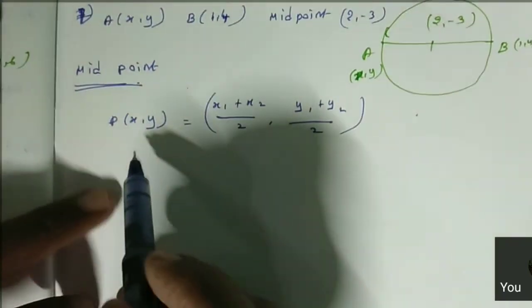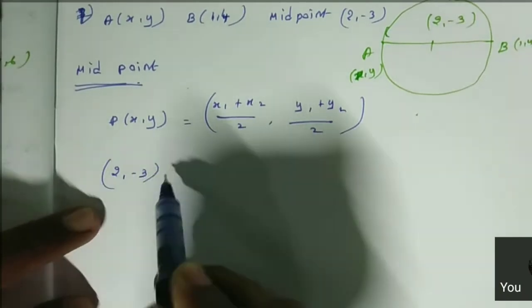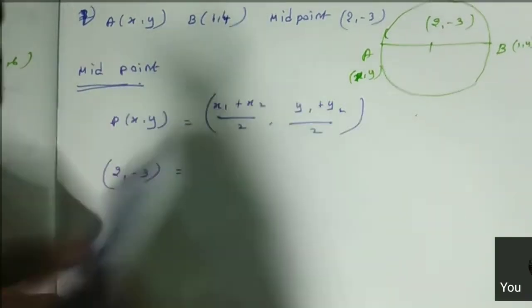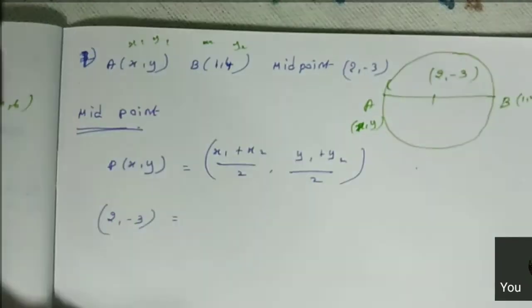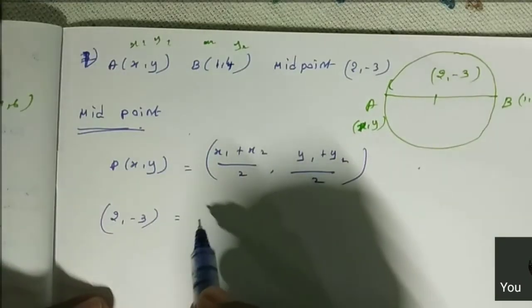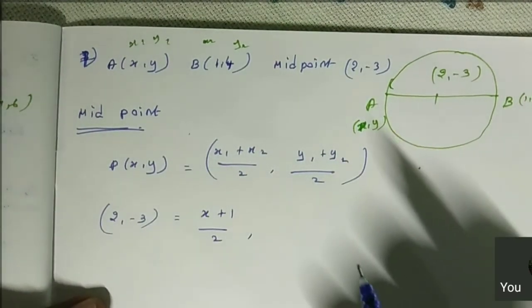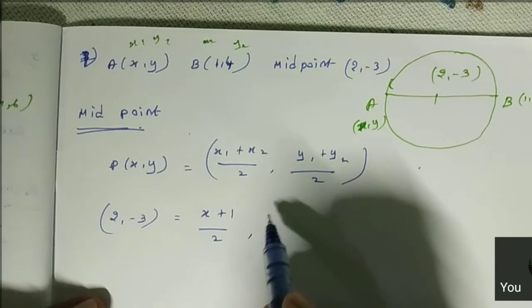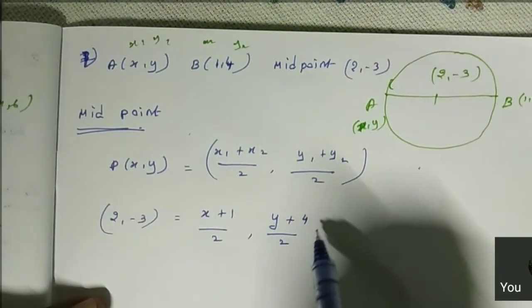So P(x, y), what is it here? They are given the midpoint as (2, -3). Now x1, x2, you just mark it here: x1, y1, x2, y2. So x1 is x, (x + 1)/2. Y is y, y2 is 4, divided by 2.